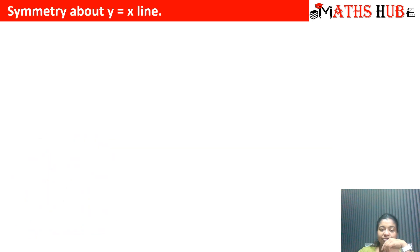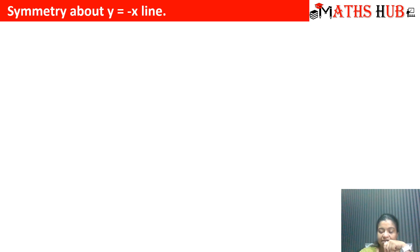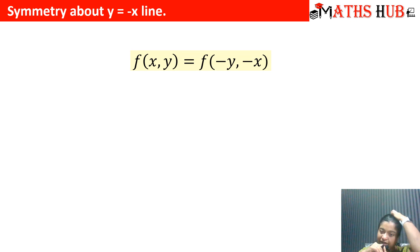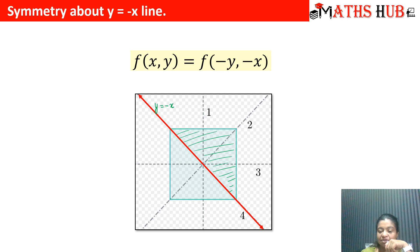Now let us talk about symmetry about the line y = x. In this case, replace x with y and y with x; if we get the same function, the graph is symmetrical about y = x. The red line acts as the y = x mirror, and the blue curve below it is the same as above it. Next, for symmetry about y = −x, replace x with −y and y with −x; the function should remain unchanged. You can also observe that the graph shown is symmetrical about the x-axis, the y-axis, and the line y = x.